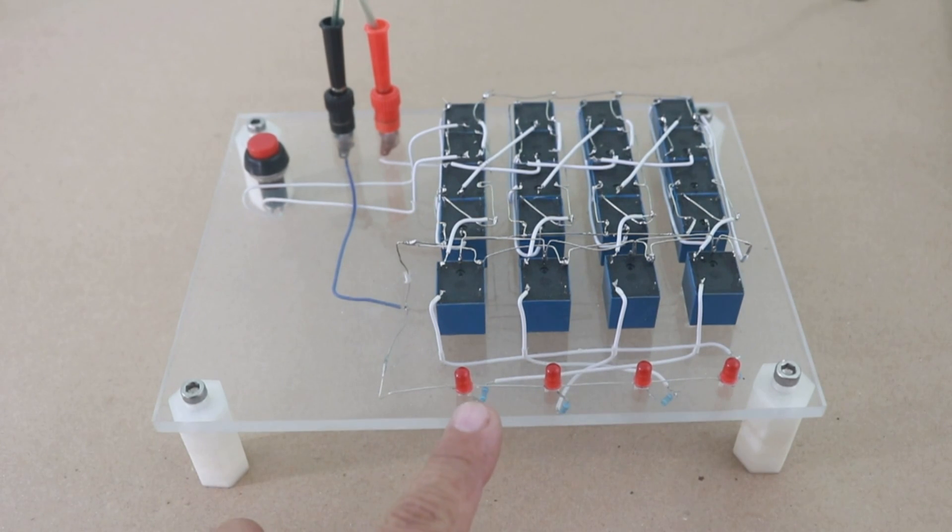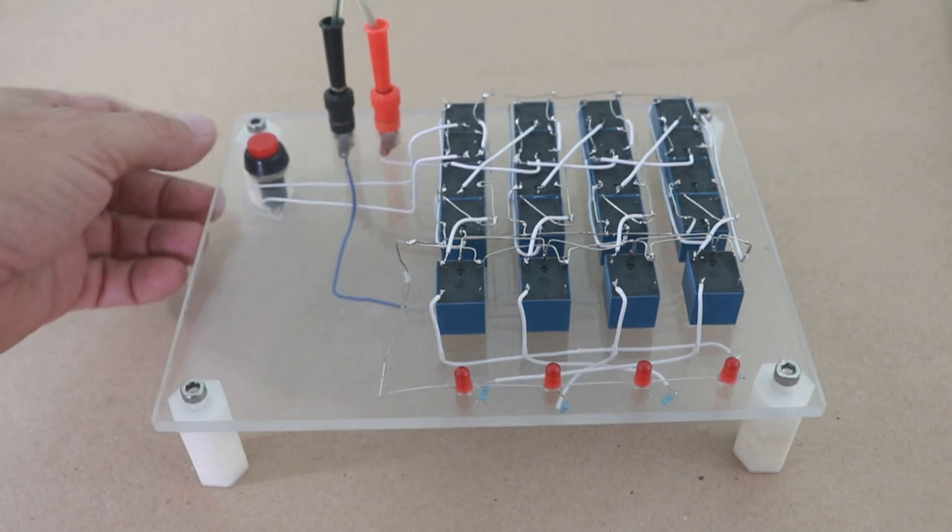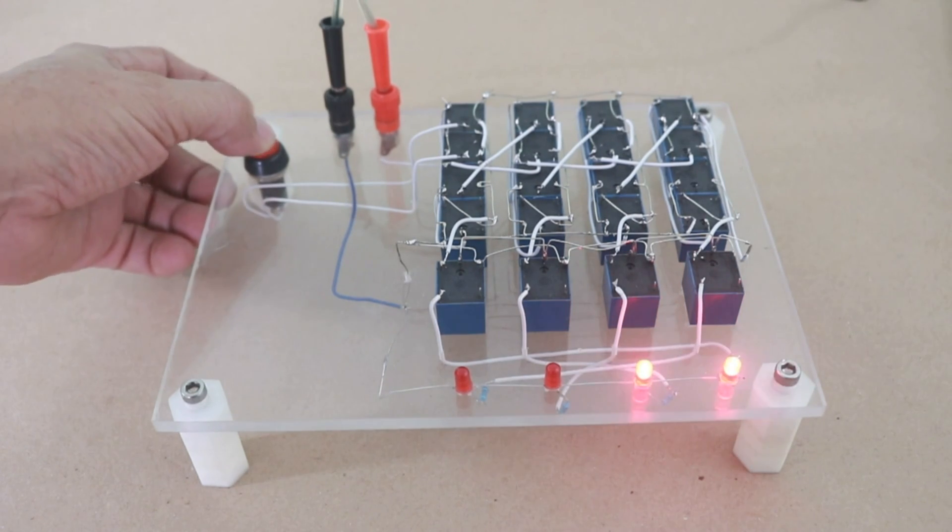The LED OFF means a 0 and ON is a 1. And you start pressing the button and the binary sequence is displayed.